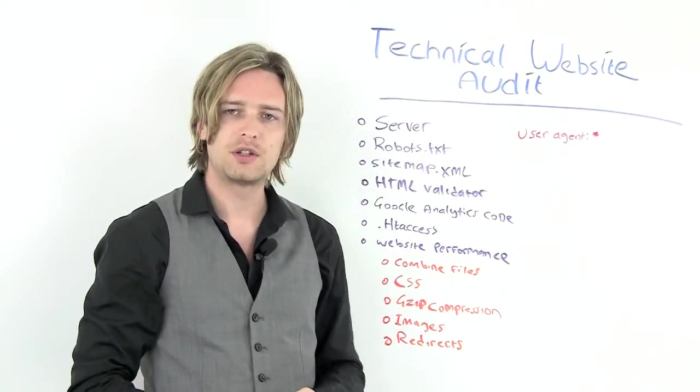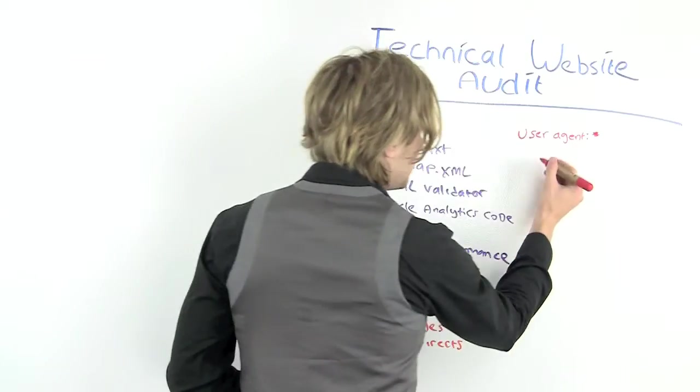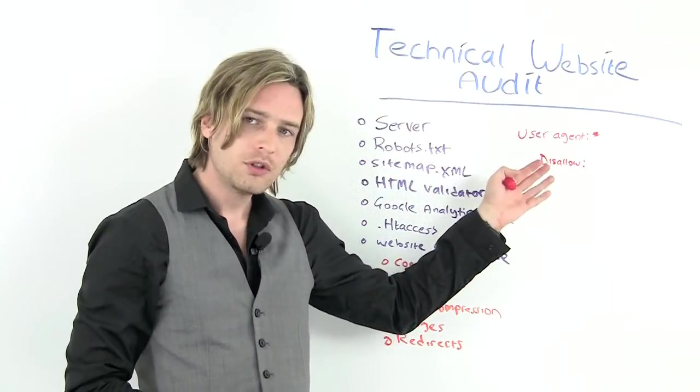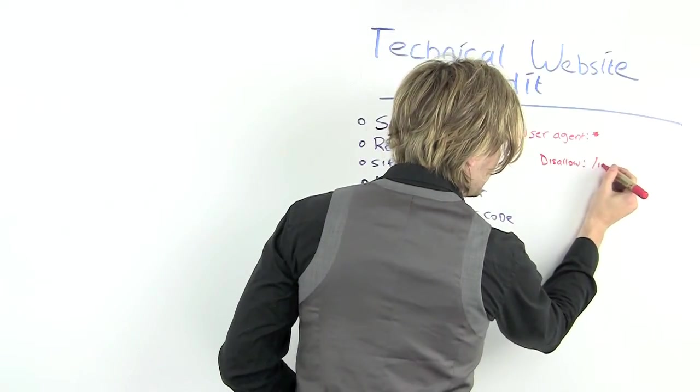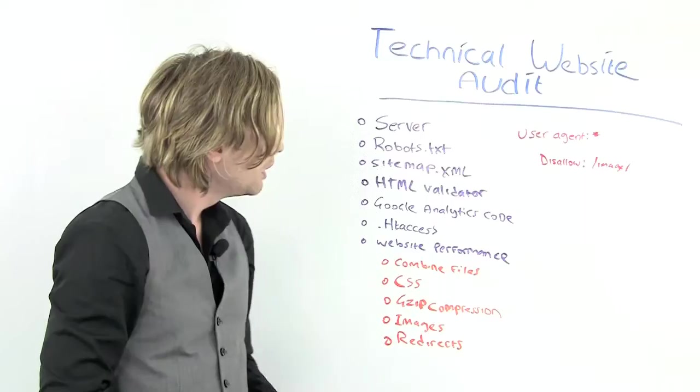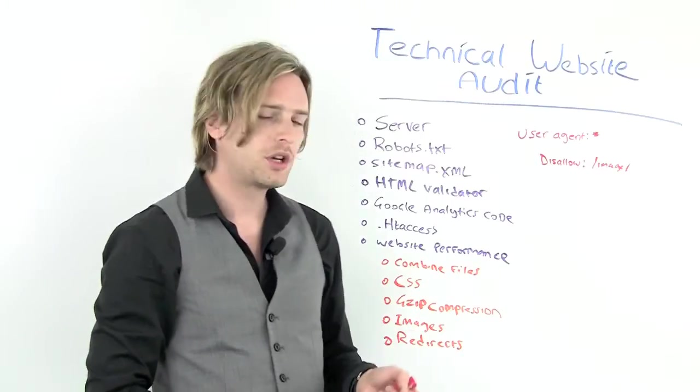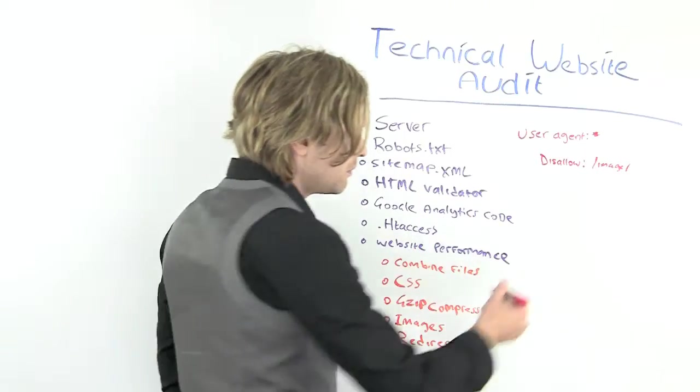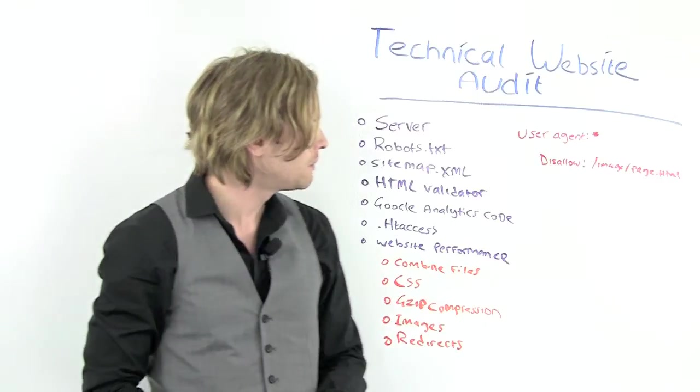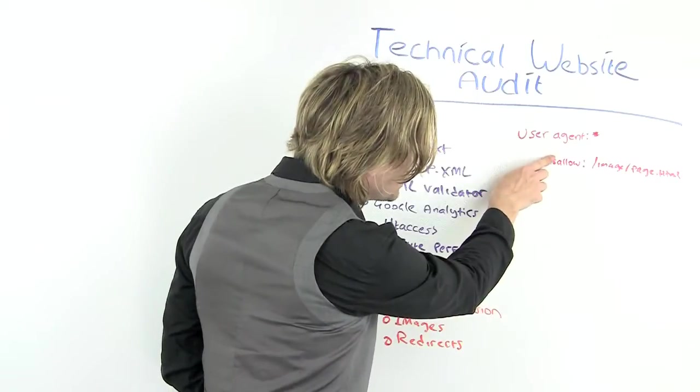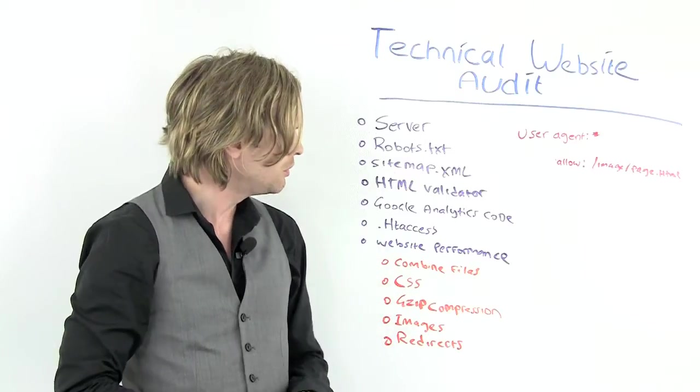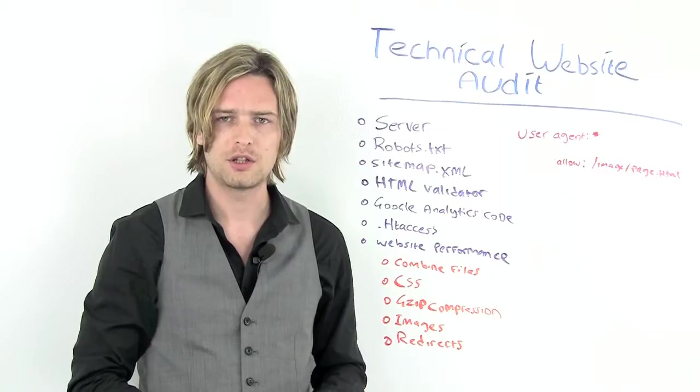If you want the user agent to apply to everyone, just simply add a star and that means it'll apply to anything. If you want to disallow a particular directory, you simply write disallow colon and then specify the directory. So to follow the example of images, that would disallow an image directory. If you wanted to stop a certain page from being indexed, just add the URL of the page. Equally, you can take away the disallow and that would specifically allow that page to be indexed.